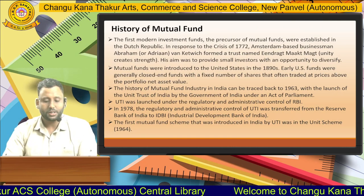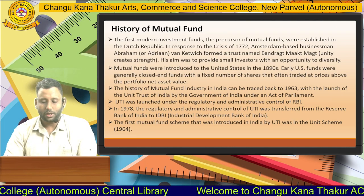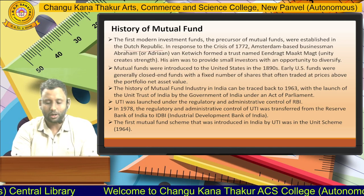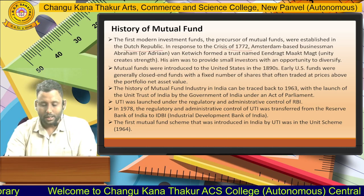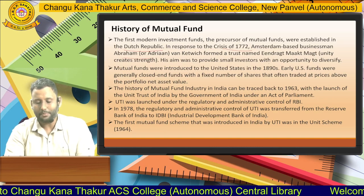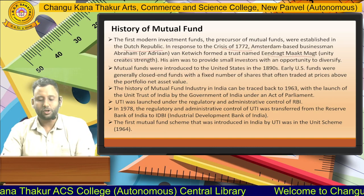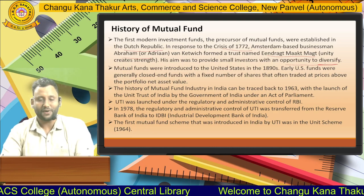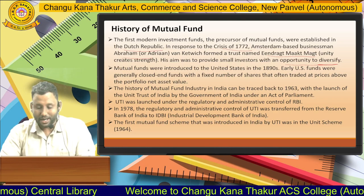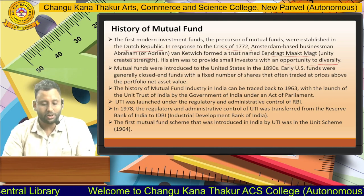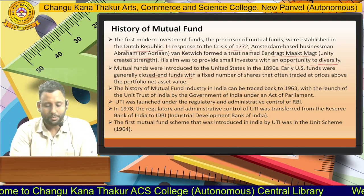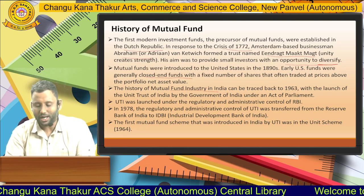The history of mutual fund: the first modern investment fund was established by the Dutch Republic in response to the crisis of 1772 by the businessman Abraham van Ketwijk, which formed a trust named Andrecht Matt Maggot. His aim was to provide small investors with an opportunity to diversify their investment. The mutual fund was introduced in the United States in the 1890s. Early US funds were generally close-ended funds with a fixed number of shares that often traded.